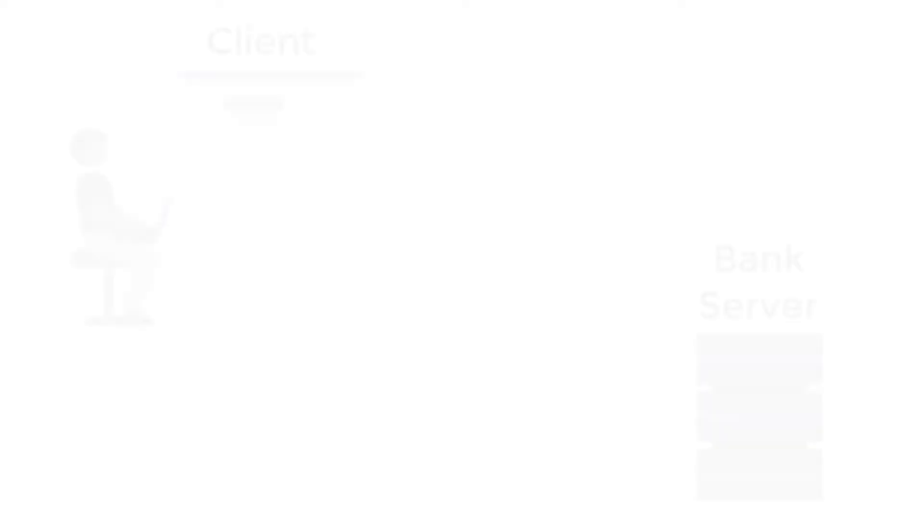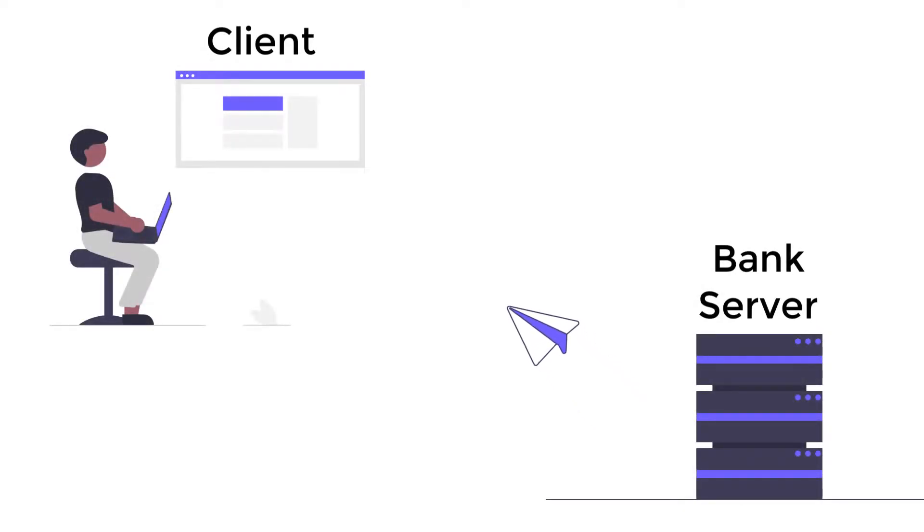Our bank's server would receive our request and go, okay, I have the information you're looking for — which is our main webpage — and send that response back to your browser. Our browser would receive that response, and a beautiful webpage would show up in our browser, and that's essentially the end of the conversation we're going to have with our bank application. So basically, in a non-persistent communication model, it's one request, one response, and our communication is done.